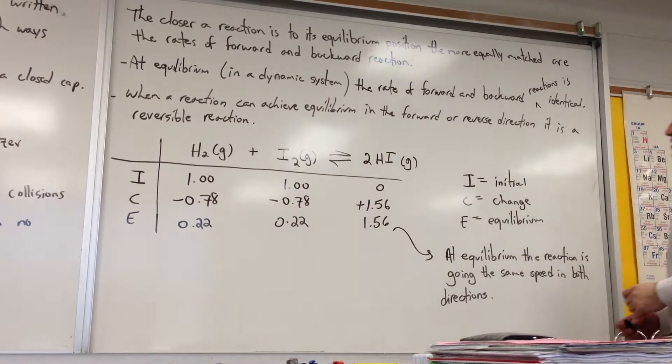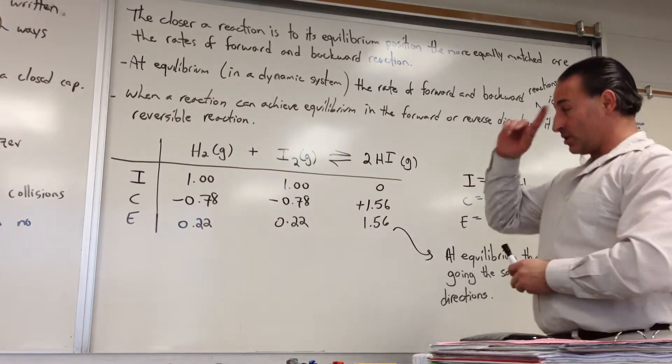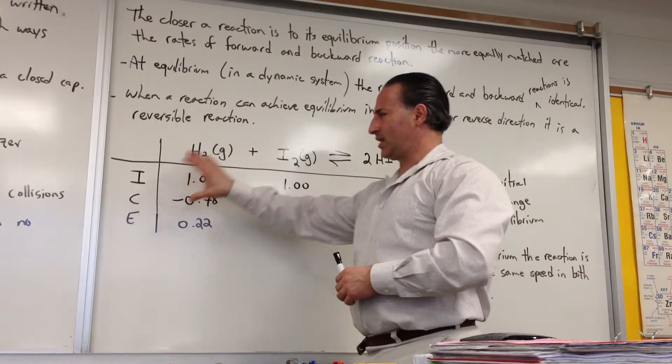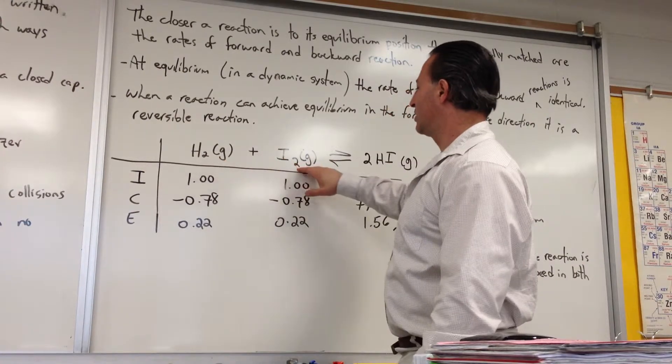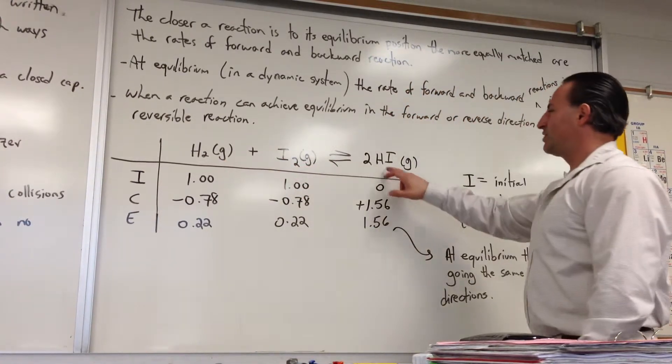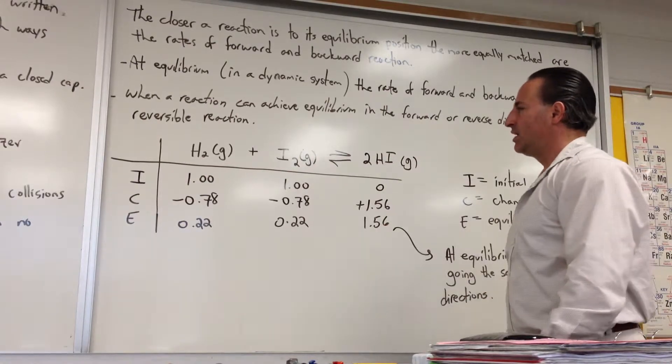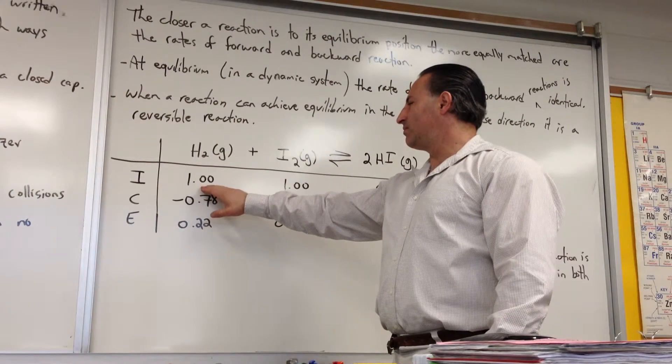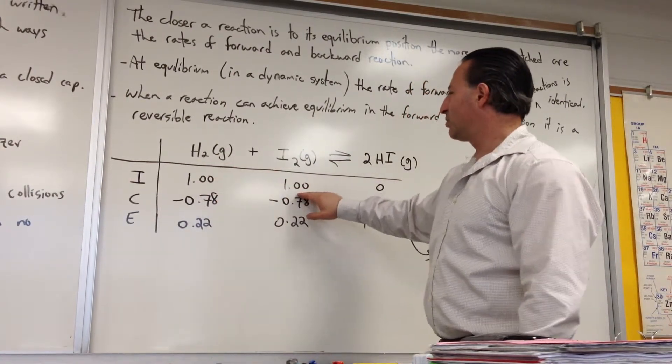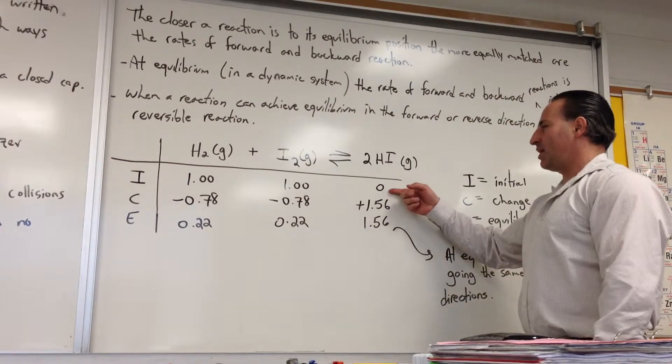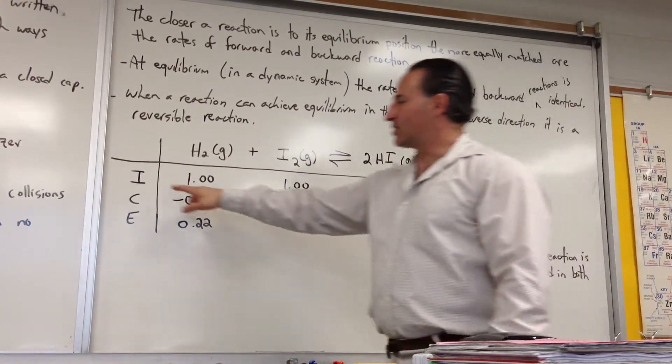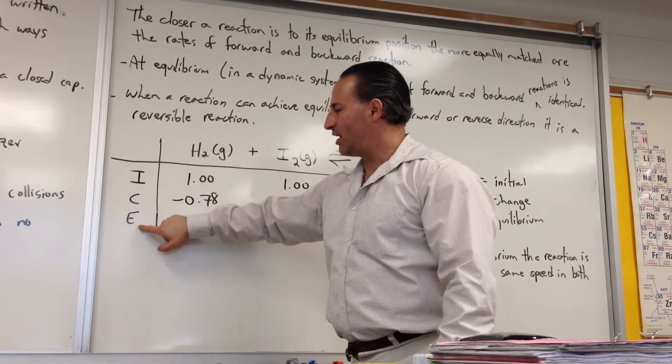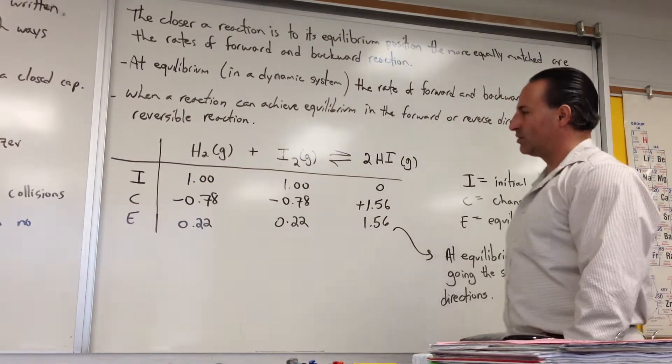When a reaction can achieve equilibrium in the forward or reverse direction, it is a reversible reaction. Now one of the tools we use to discuss chemical reactions is an ICE table. And I've taken a little bit of drawing a typical ICE table, where here they show the reaction of hydrogen gas with iodine gas to form hydroiotic acid, all of them in the gas phase. If you were to start out with a mixture of one mole per liter of hydrogen gas and one mole per liter of iodine gas and no hydroiotic acid, because it's the beginning of the reaction, nothing has happened yet, you could portray the reaction by showing what's called the change. So initial conditions, change, and finally equilibrium condition. It's called the ICE table that we use to do the calculations.